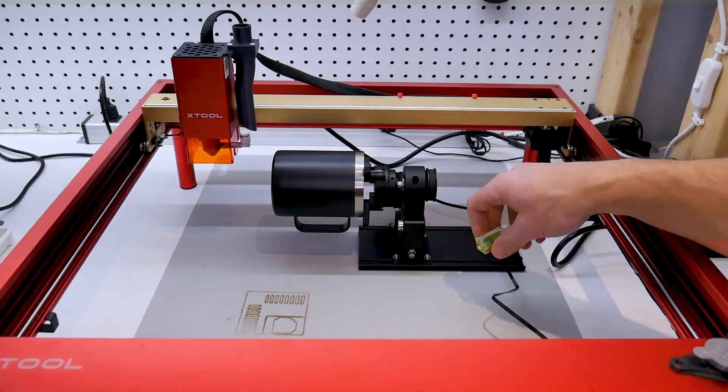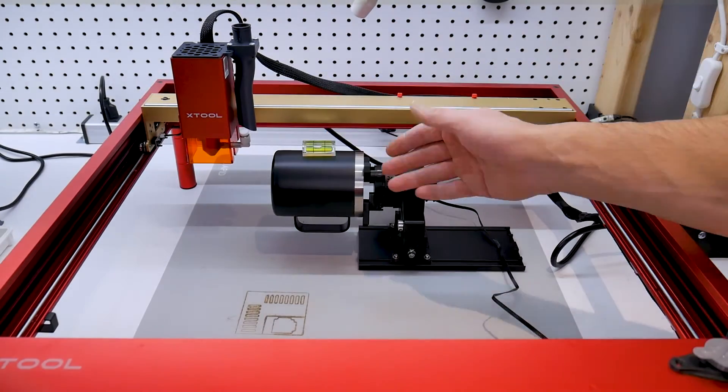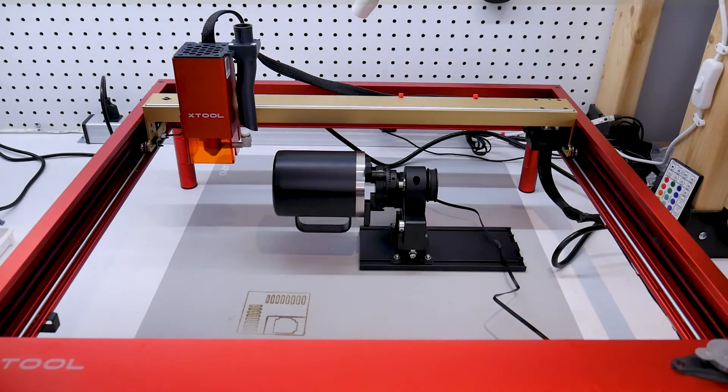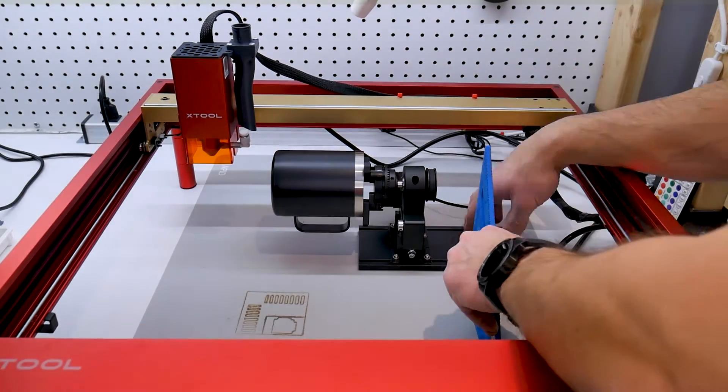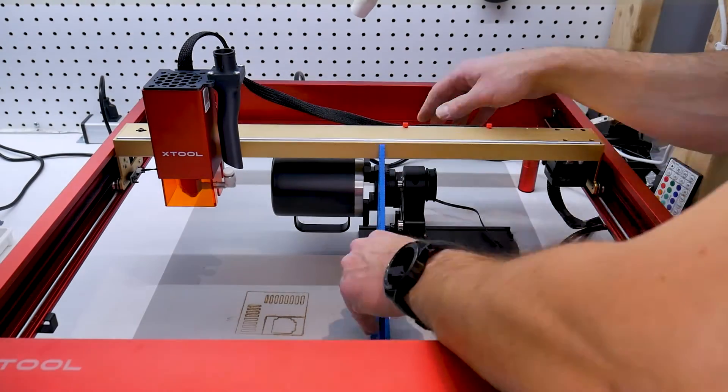In a previous video I went into great detail explaining the setup and use of the RA2 rotary attachment with the Xtool D1. If you're looking for that video I'll put a link in the top right hand corner of the screen.